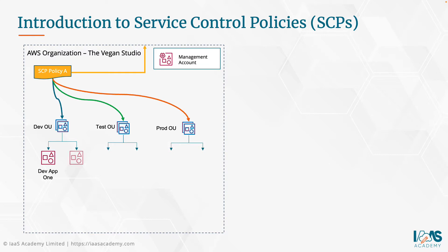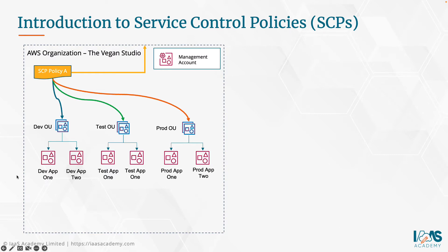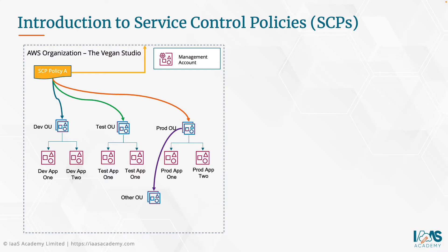Within these OUs, you would have one or more member accounts. So in the dev OU, we've got dev app one and dev app two — two separate accounts for two different applications — a test environment for those applications, and likewise a production environment for those applications. You can also have nested OUs. There's nothing to stop the prod OU having OUs nested within it. You can go up to five levels deep in your hierarchy of OUs.